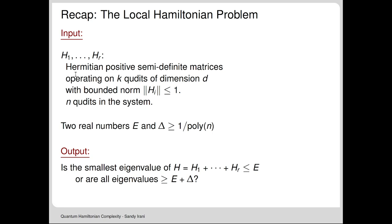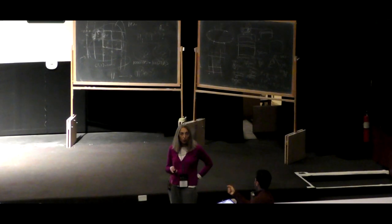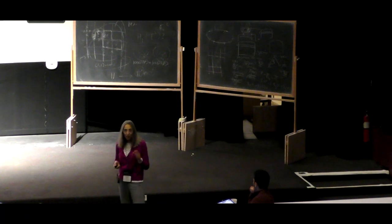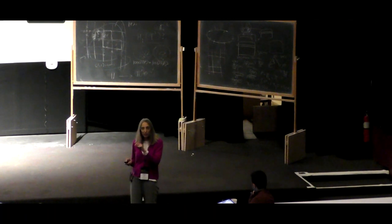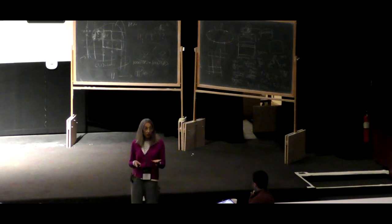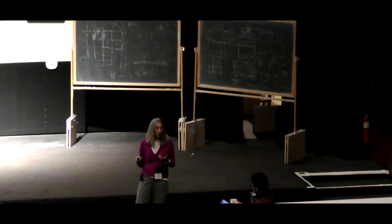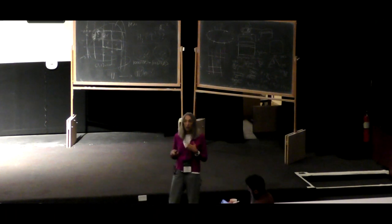We proved QMA hardness, and to see it's in QMA: the certificate is the state, and then you just evaluate each of the terms H_1 through H_m. If you give me the state, I can measure the energy probabilistically—pick a random term and have a unitary that measures the energy of that term. It's like a coin flip corresponding to the energy of that term. With enough measurements, you can hone in on the correct energy.